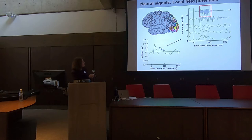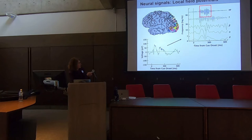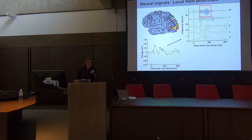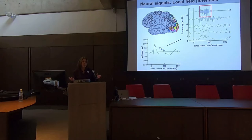What we do with the signal is filter it in the frequency domain, which allows you to identify slower and faster components in the field potential. The signal I will focus on in the human data is a high-frequency broadband signal above 70 to 90 Hz, going as high as 200 Hz. This signal can be thought of as a proxy for multi-unit activity — a simplified but useful framing for this talk.